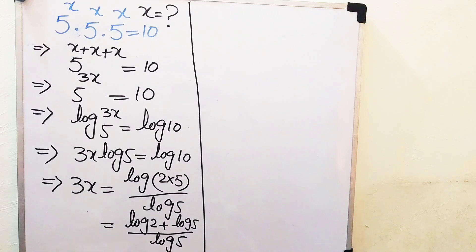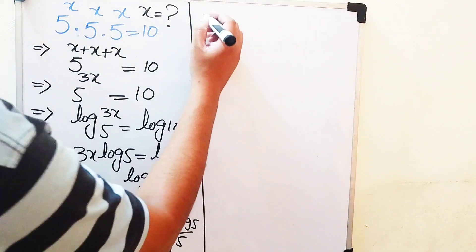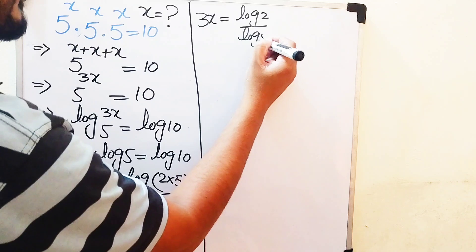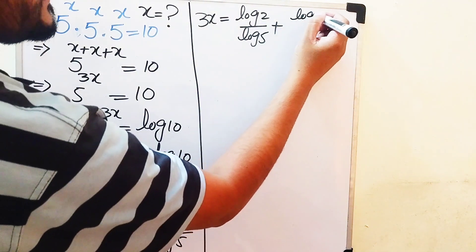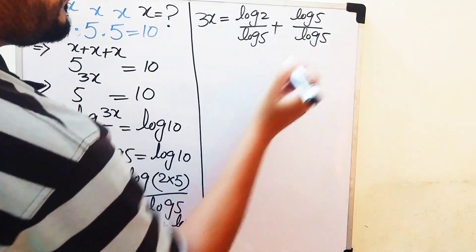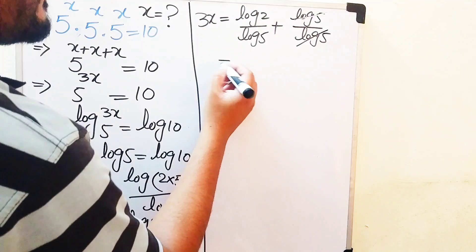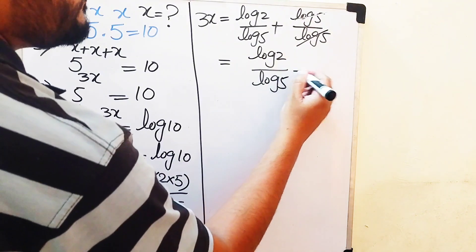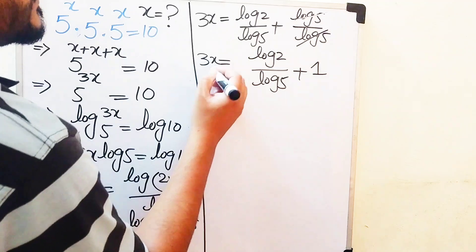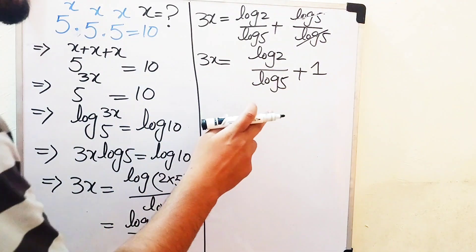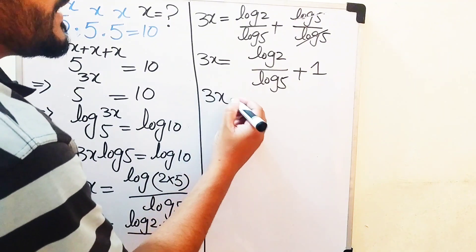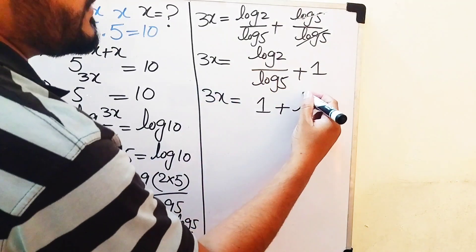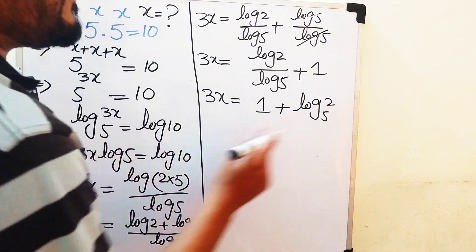In the next step, we use the logarithm product rule to expand the numerator: log(2·5) equals log 2 plus log 5, all divided by log 5. We then break the fraction, writing 3x equals log 2 over log 5 plus log 5 over log 5. The log 5 terms cancel, giving us 3x equals log 2 over log 5 plus 1.